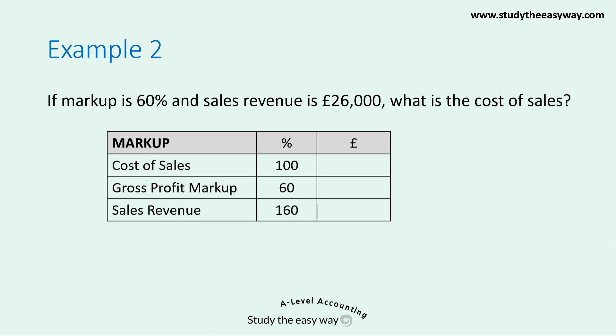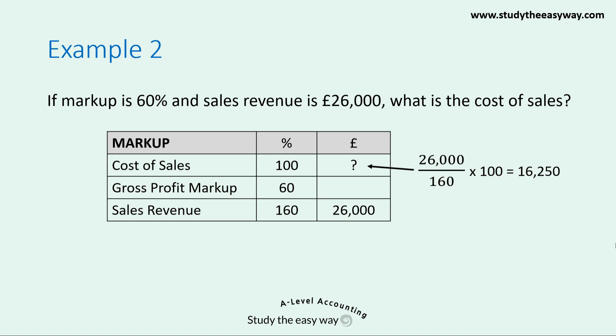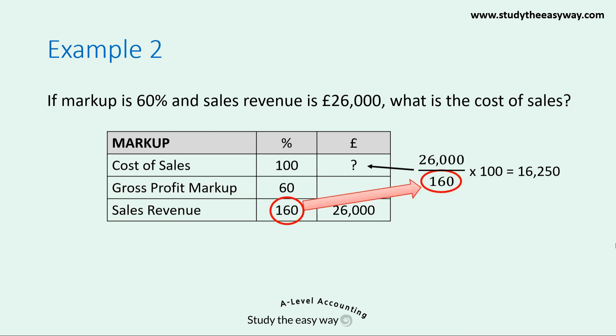We write in the known figure: sales revenue is £26,000. The question is what is the value of the cost of sales? Using exactly the same technique as before: take the figure we know — £26,000 — and look at the figure next to it in the percentage column, which is 160. Divide £26,000 by 160, then multiply by the figure in the percentage column next to the question mark, which is 100. Putting these figures into your calculator gives a cost of sales of £16,250. Notice this technique was exactly the same as before, even though it's a markup question rather than a margin question — that's the beauty of this method.